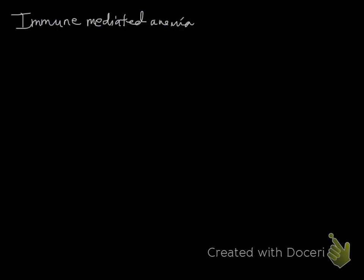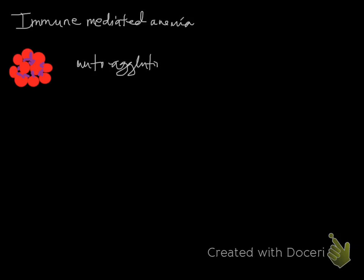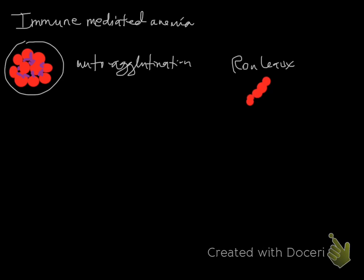Another finding you may see with immune-mediated anemia is autoagglutination, though it isn't always present. This is more often seen when you have large IgM pentamers, and within the blood tube and on the smear you'll see red blood cells sticking together in a big grape-cluster pattern. There are other things that can make red cells stick together — for example, Rouleau, which is when red cells stack together like a group of coins due to increases in proteins and red cell stickiness. Rouleau has nothing to do with immune-mediated anemia.